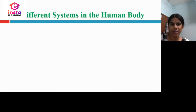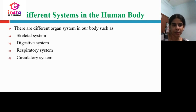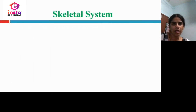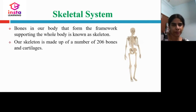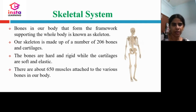There are different organ systems in our body, such as the skeletal system, digestive system, respiratory system, circulatory system, reproductive system, excretory system, and nervous system. Our skeleton is made up of 206 bones and cartilages. The bones are hard and rigid, but the cartilages are soft and elastic. There are about 650 muscles attached to the various bones in our body.